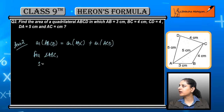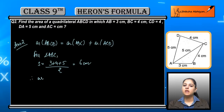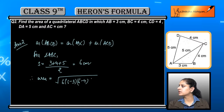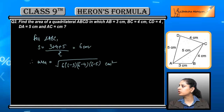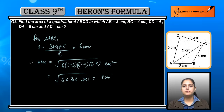For triangle ABC, the three sides are 3, 4, and 5. Adding and dividing by 2, the semi-perimeter is 6 cm. Applying Heron's formula: under root of 6 × (6−3) × (6−4) × (6−5), which gives us under root of 6 × 3 × 2 × 1, which is equal to 6 cm².